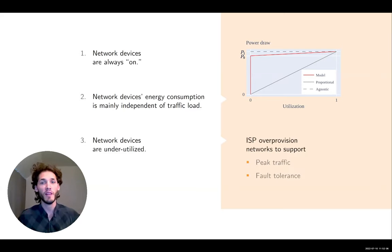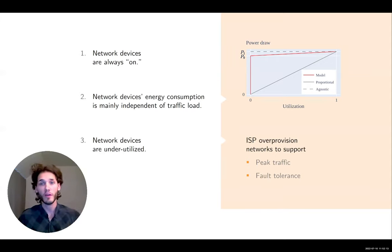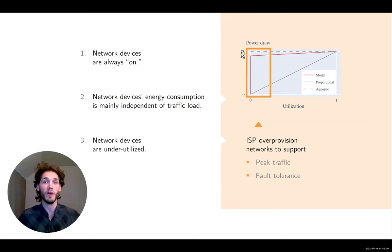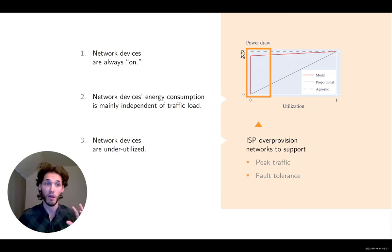The third point is that in ISP networks, devices tend to be heavily underutilized. The reason, as you all know, is that ISPs over-provision their network so they can sustain peak traffic and be resilient to failures. But given the load-independent power profile, this means we are essentially operating those devices in their least energy-efficient region most of the time, which is clearly suboptimal.